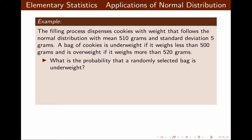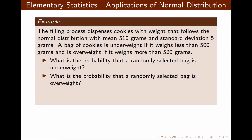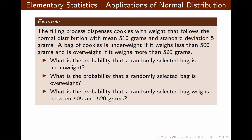We want to find the probability that a randomly selected bag is underweight. We also want to find the probability that a randomly selected bag is overweight, and then we want to find the probability that a randomly selected bag weighs between 505 and 520 grams.